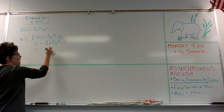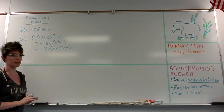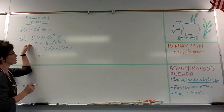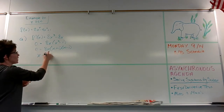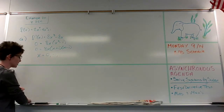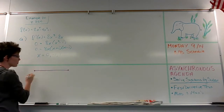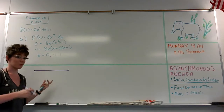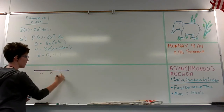Continuing to factor, I get x plus 1 and x minus 1 — that's just a difference of squares. So I can find that my critical points, where the slope is horizontal, are at x equals 0, negative 1, and positive 1. Now let's use that information to build our sign chart and determine where the function is increasing or decreasing, and whether these points are maximums or minimums. I'll put negative 1, zero, and positive 1 on the chart.